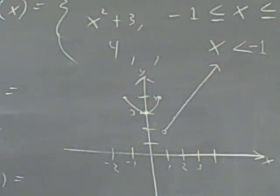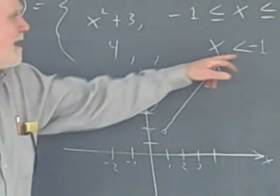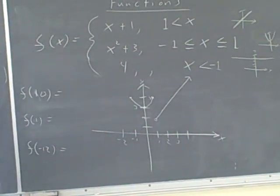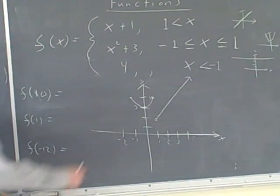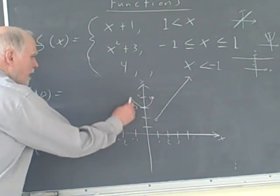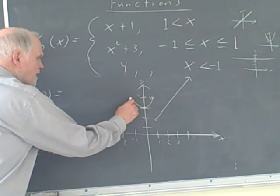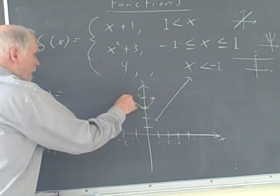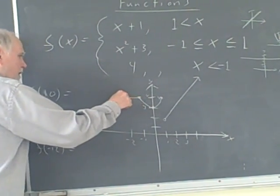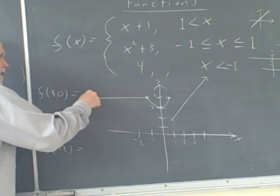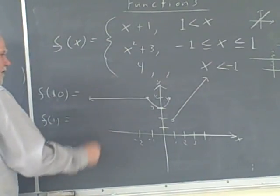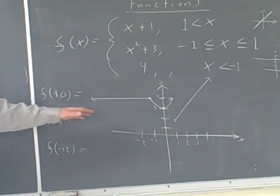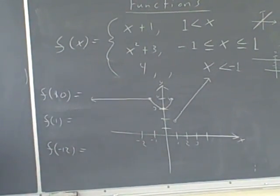When x is less than negative 1, I have the horizontal line y equals 4. That point at negative 1 is open, but it's filled in by the previous graph. The line goes out to the left forever. And there's the picture — a really strange-looking function.